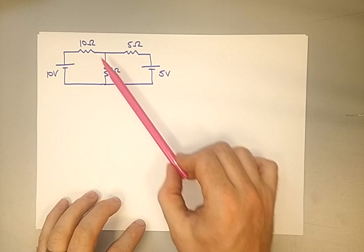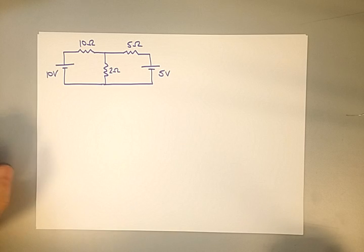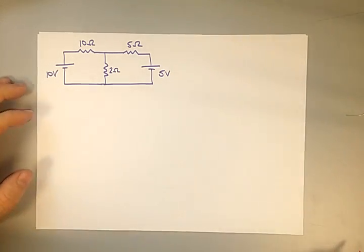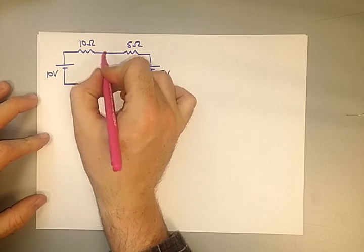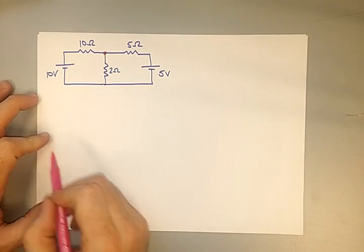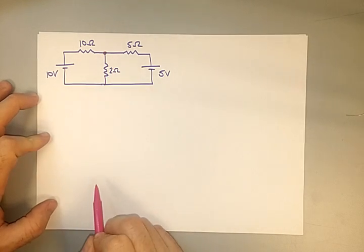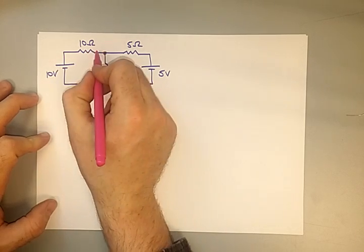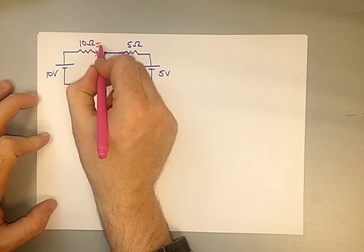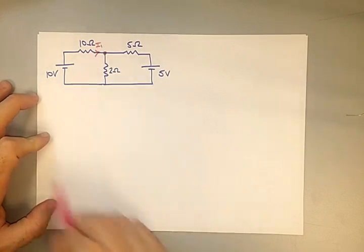We'll put some figures in to take you through this example. For this we need to use Kirchhoff's laws. Kirchhoff's current law states the current flowing into a node equals the current flowing out. A node is a connection of wires. From the first voltage source, a current flows through its resistor — we'll call that I1.